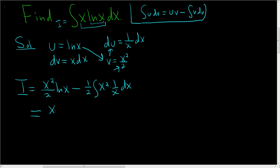So this is (x²/2)ln(x) minus 1/2 the integral of x dx. We end up with (x²/2)ln(x) minus 1/2 times x²/2 plus some arbitrary constant.